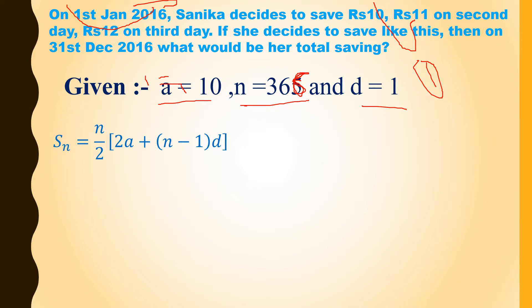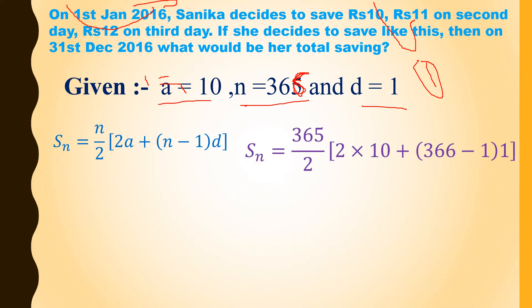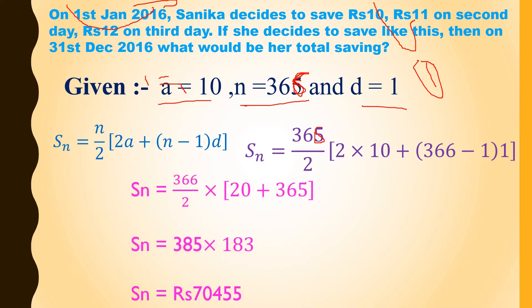Now apply the S_n formula: S_n = (n/2) × [2a + (n − 1) × d]. Putting the values: S_n = (366/2) × [2 × 10 + (366 − 1) × 1] = 183 × [20 + 365] = 183 × 385 = 70,455 rupees total savings at the end of the year.